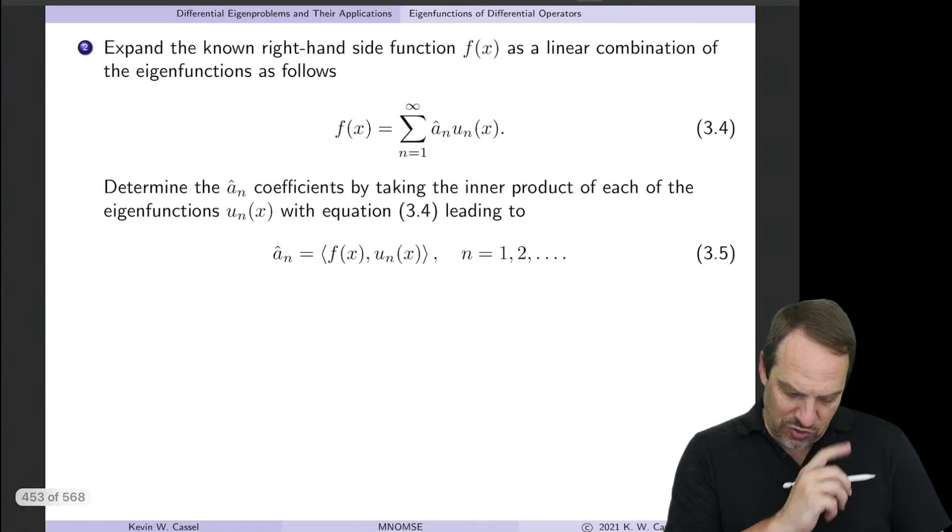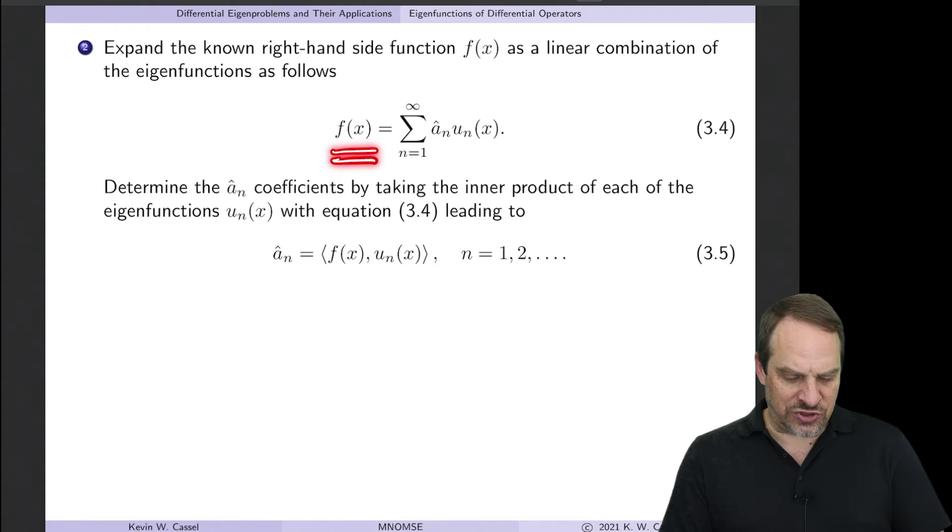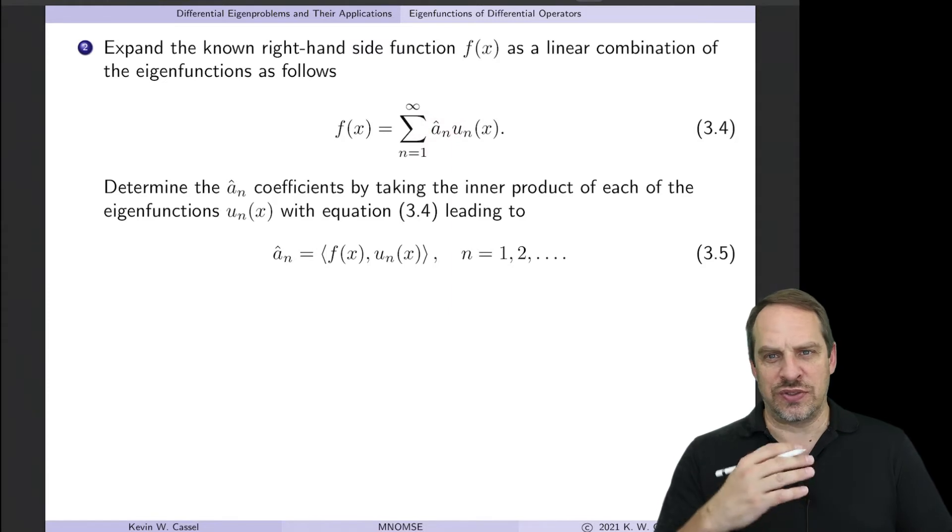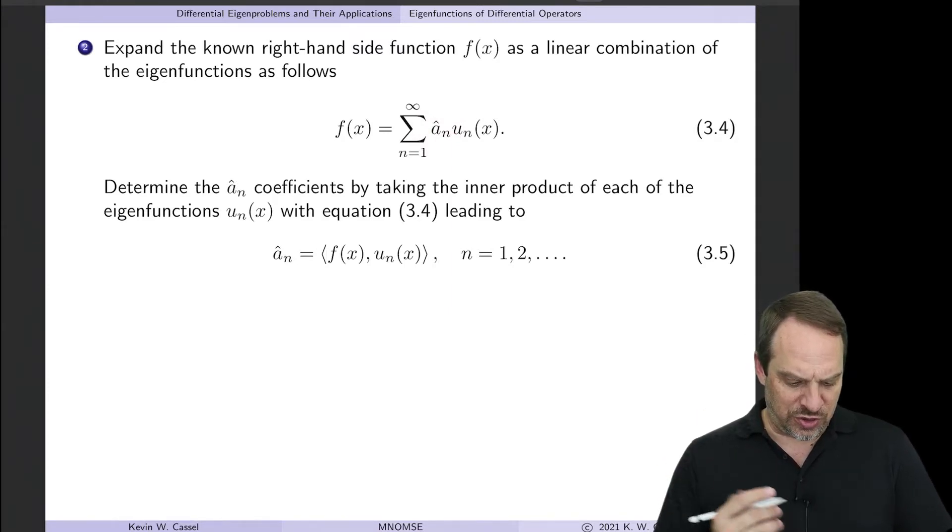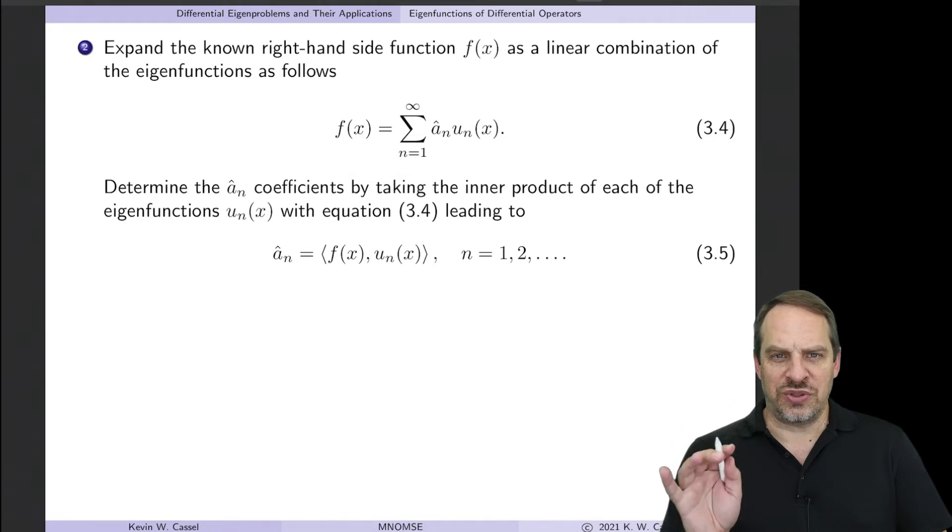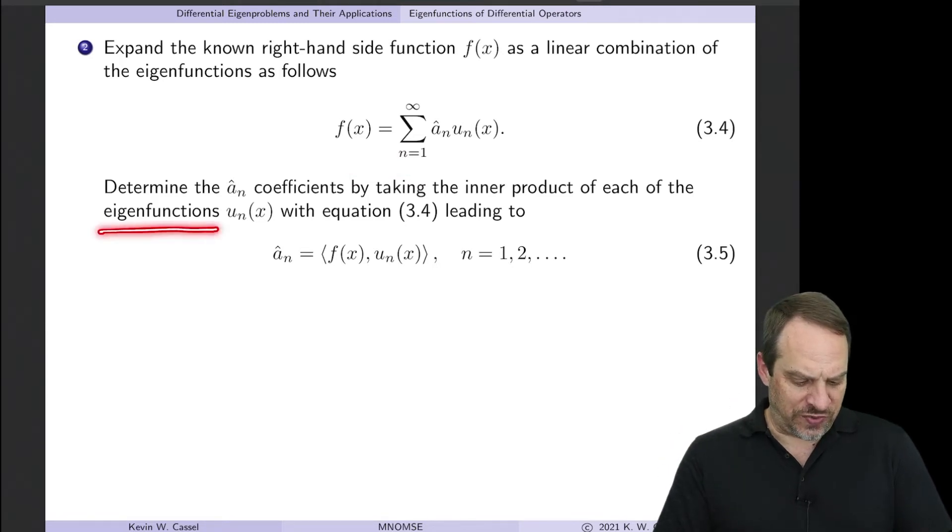The second step then will be to take the right-hand side function F and write that as a linear combination of these basis functions, the eigenfunctions of the differential operator. We'll have these coefficients A sub n hat. It's the same notation we used in Chapter 2 for the parallel case. The way you obtain the A sub n hats is to take this expression, take the inner product on both sides with the eigenfunctions U sub n of our differential equation. And here's what that does.